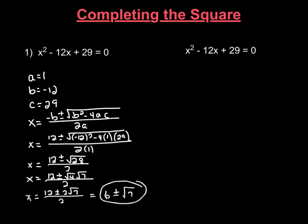What we're going to talk about here is another way to solve the same exact equation, and it's called completing the square. Now in order to do this, the first thing you want to do is you want to take whatever constant, whatever number you have on the same side of the equation with the x's, and you want to move it to the other side of the equation. So in order to do that we're going to subtract 29 from both sides of the equation.